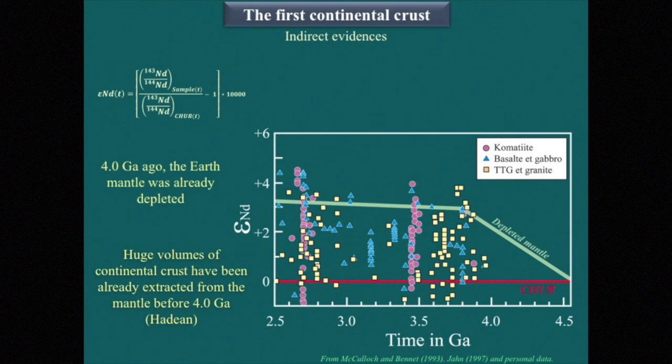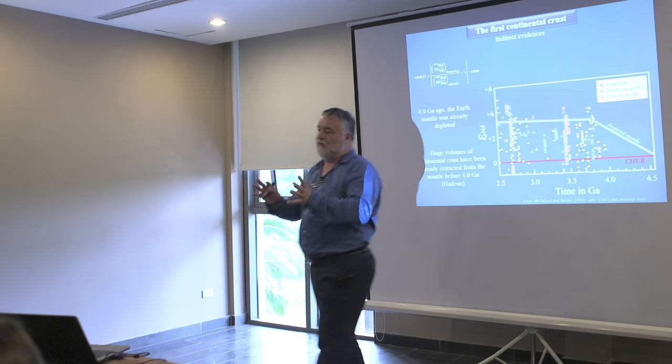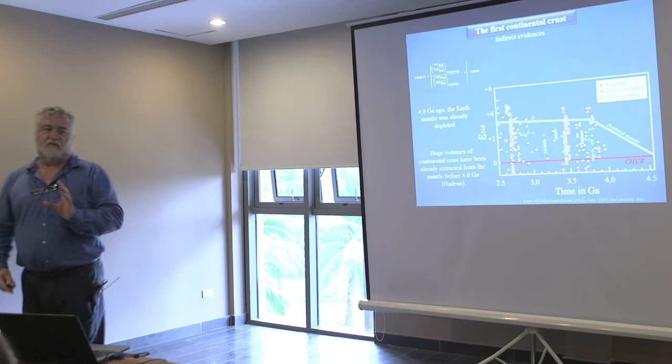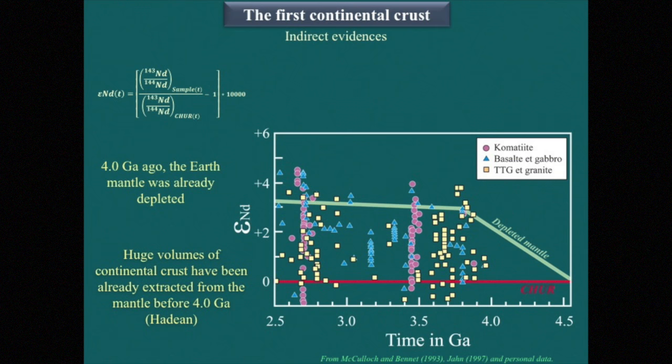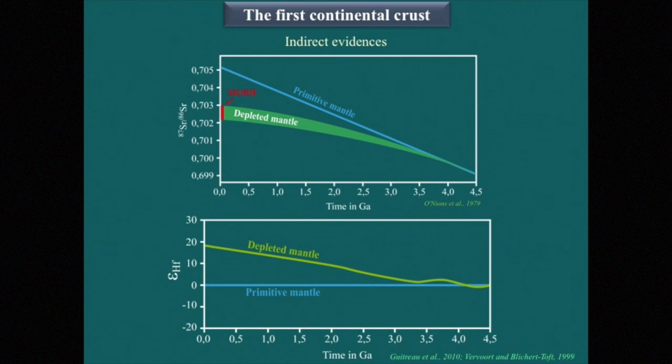Looking at neodymium isotopes plotted against time, here is the chondritic composition — meaning without differentiation. If we look at the oldest rocks — Acasta, Isua, and others — we can already see values different from the chondritic reservoir. That means these oldest rocks at the surface of the Earth were formed from an already depleted mantle, a mantle whose composition had been changed by extraction of early continental crust. The same is true for strontium and hafnium isotopes.